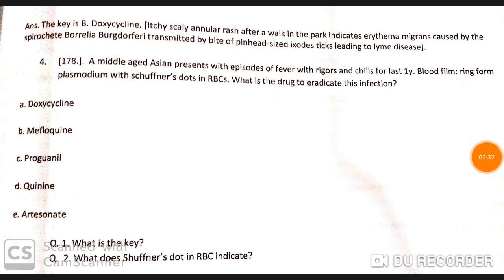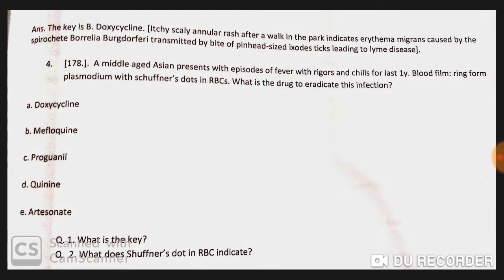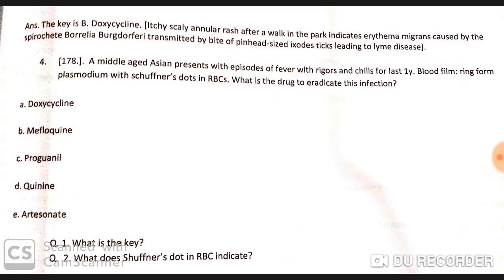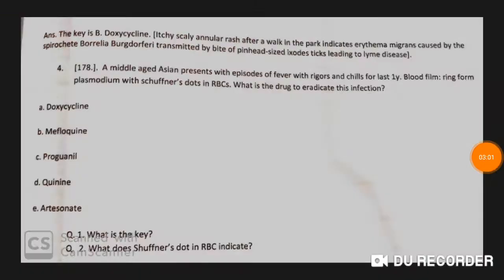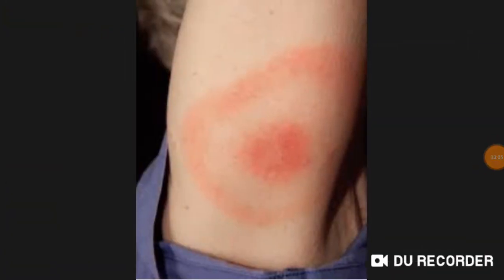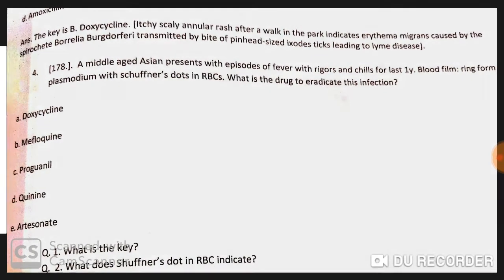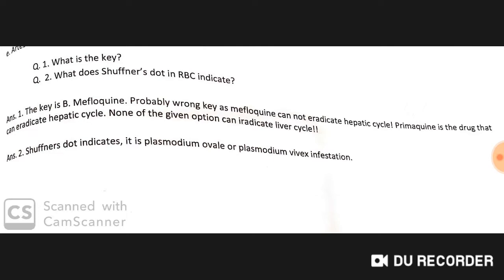A middle-aged Asian man presents with episodes of fever with rigors and chills for the last one year. Blood film shows ring forms of Plasmodium with Schüffner's dots in RBCs. The drug to eradicate this infection is primaquine — not mefloquine, as mefloquine cannot eradicate the hepatic cycle. Primaquine eradicates the hepatic cycle. Schüffner's dots indicate Plasmodium ovale and P. vivax.